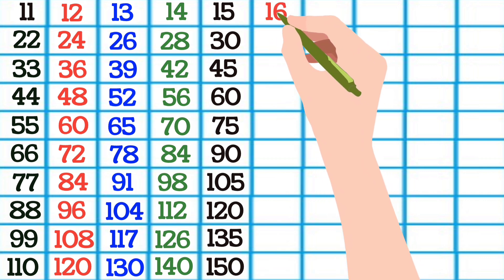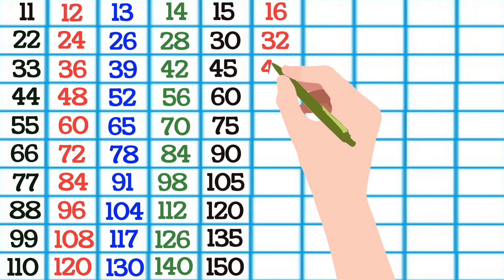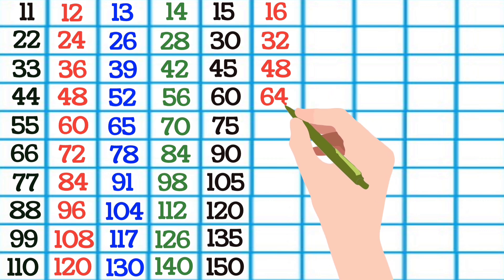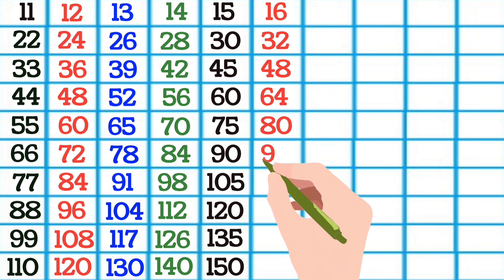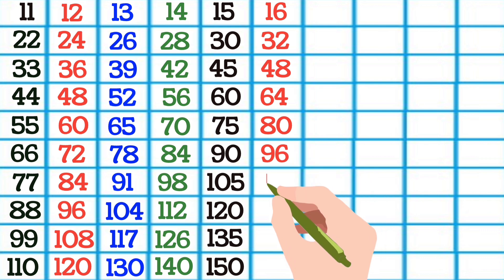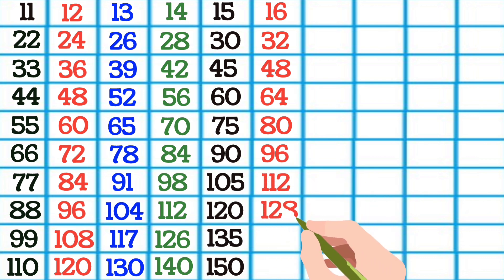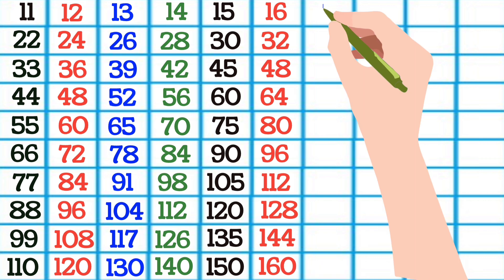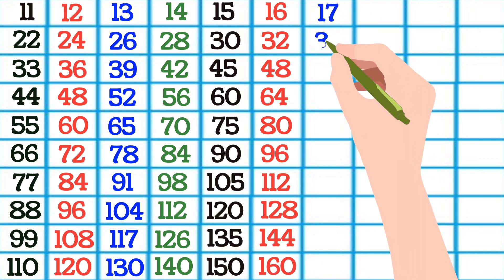16 1s are 16, 16 2s are 32, 16 3s are 48, 16 4s are 64, 16 5s are 80, 16 6s are 96, 16 7s are 112, 16 8s are 128, 16 9s are 144, 16 10s are 160.